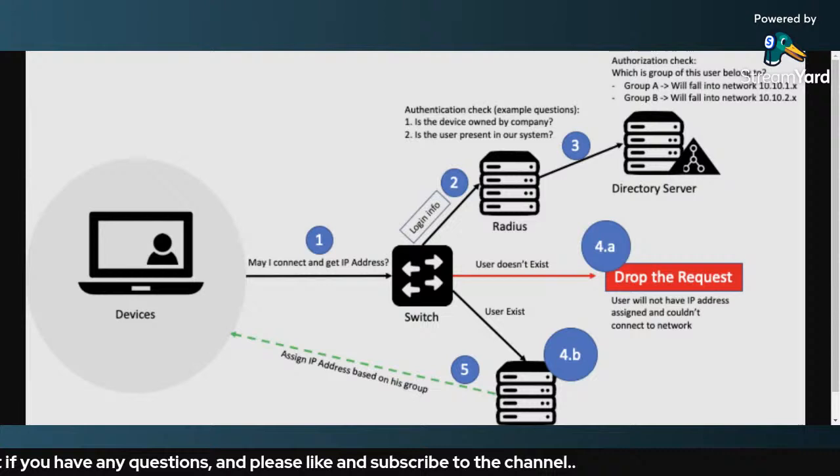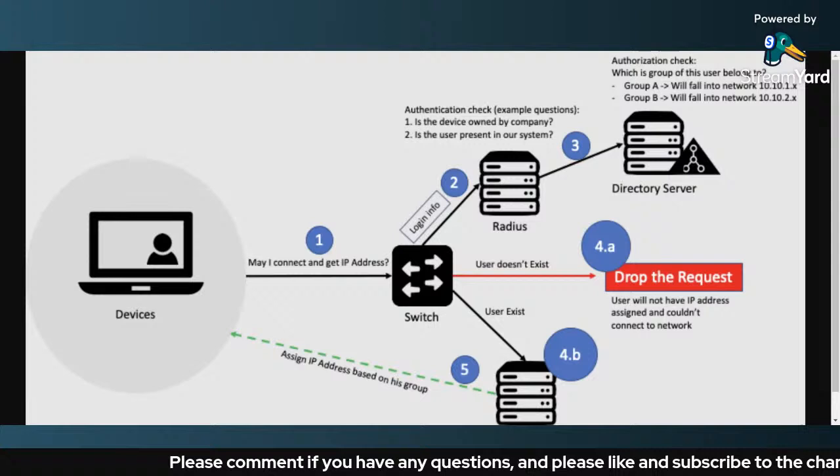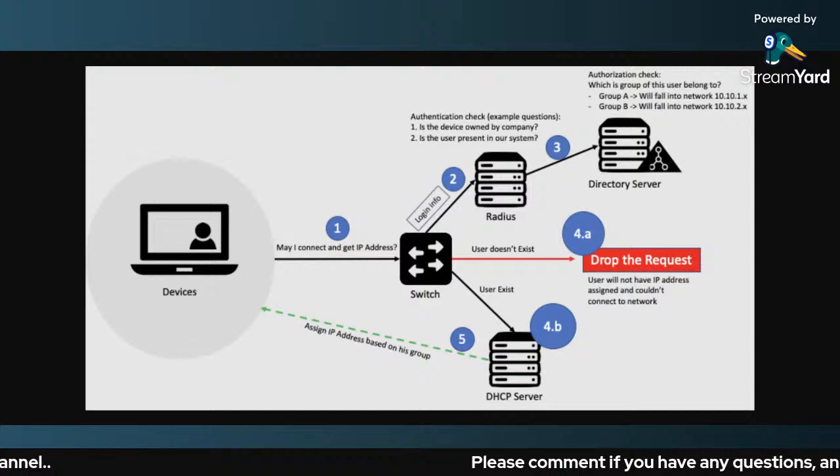Let us see how these steps actually happen one by one. When a new device joins the network, the first thing it does is ask for an IP address — that is the first thing any device would do. So it asks for an IP address.